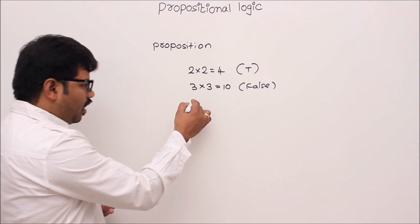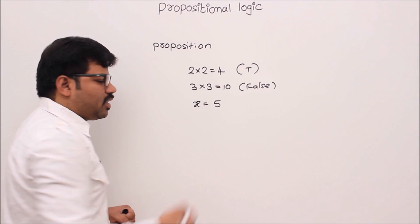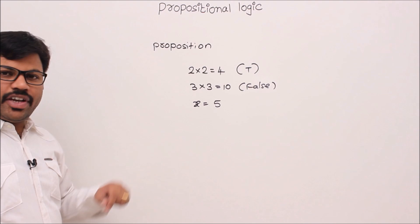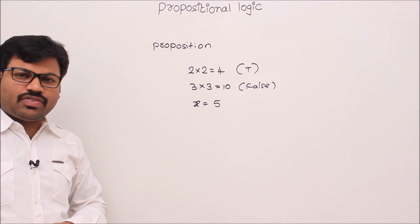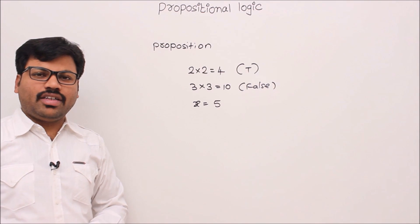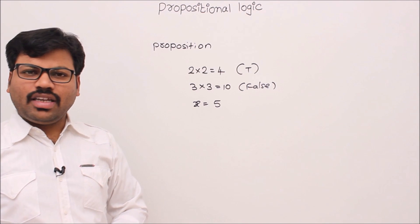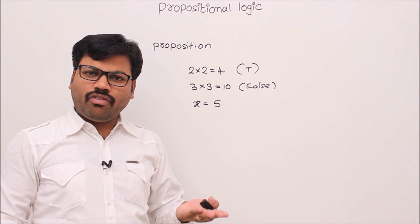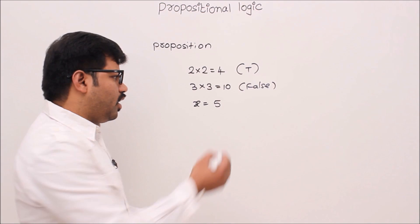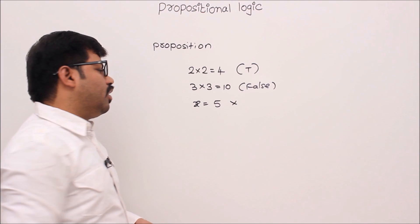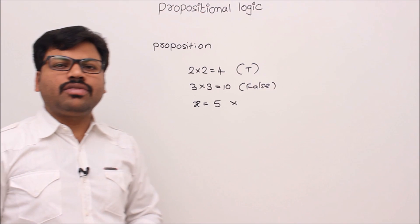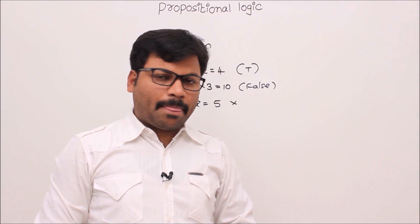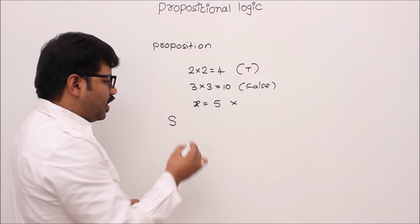Sometimes we cannot assign any truth value. For example, x=5: since x is a variable, we can't decide whether x is 5 or not. If we don't know x's value, we can't determine the truth. That's why the truth value of this statement is unknown, and so x=5 is not a proposition.